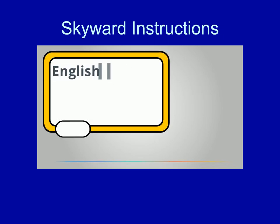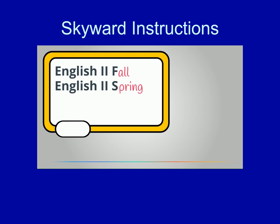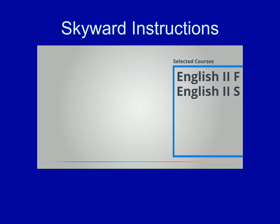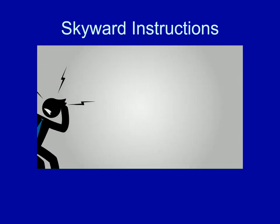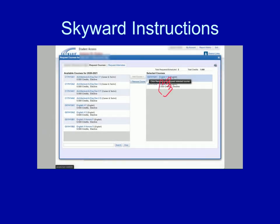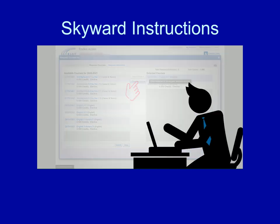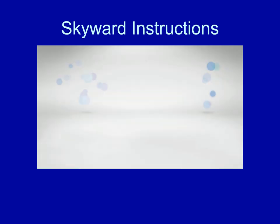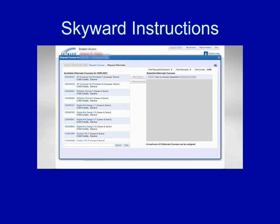Please note that the F and S that you will see beside the course names stand for Fall and Spring. For year-long courses, make sure that both classes are showing in the Selected Courses box. If you accidentally add a course you don't want, highlight it in the Selected Courses column and choose Remove Course. Continue this process until all courses appear in the Selected Courses column. If your school has enabled Course Alternate Requests, you can utilize that feature by choosing the link for View Alternates near the top of the page.